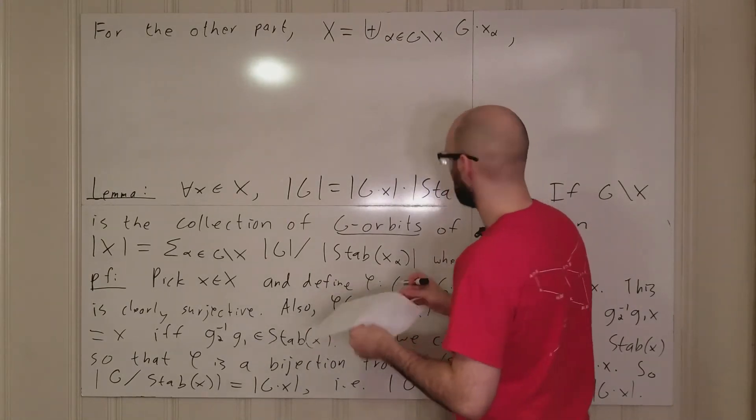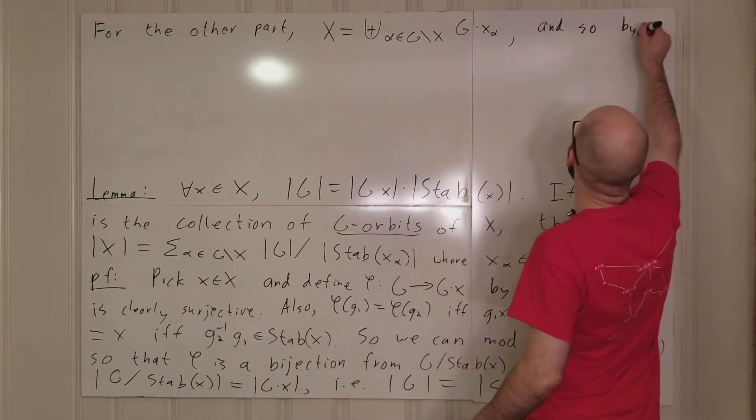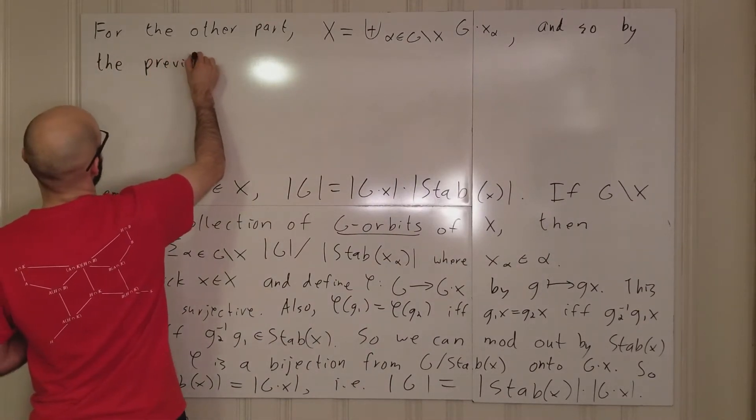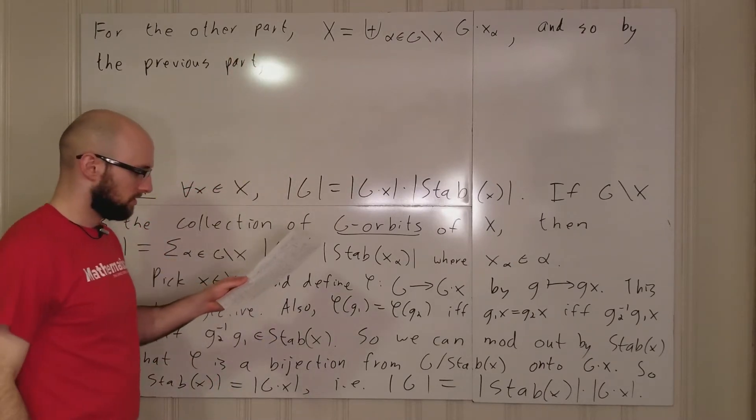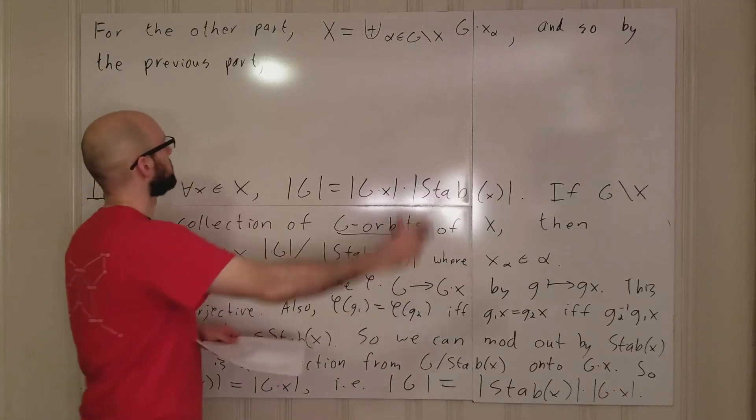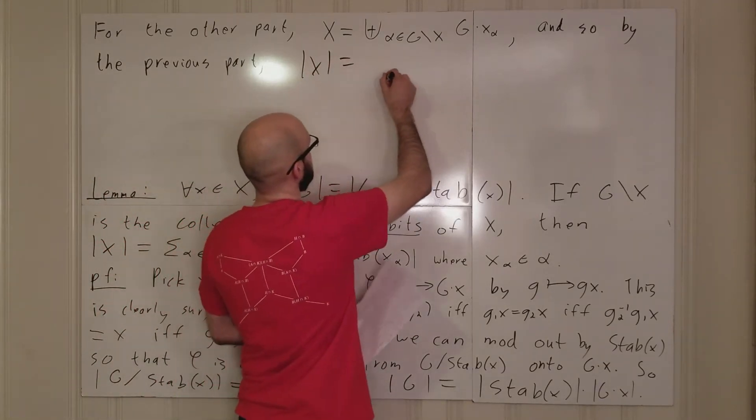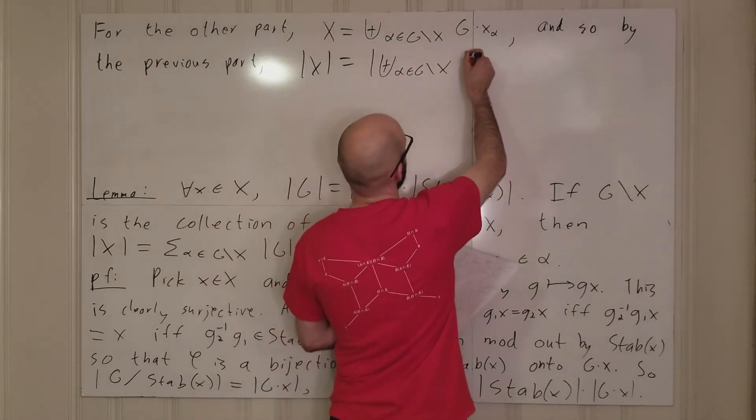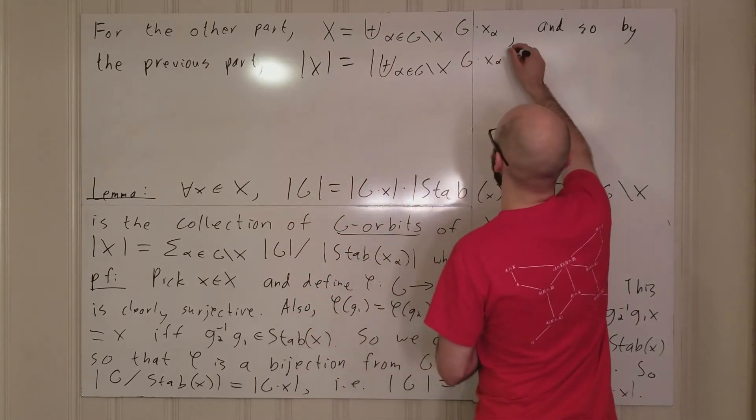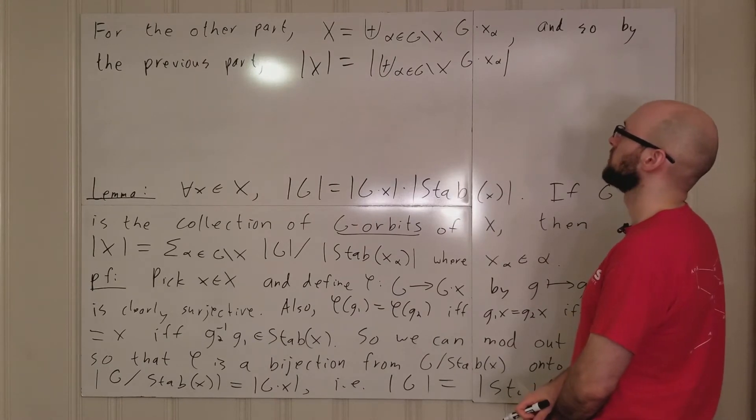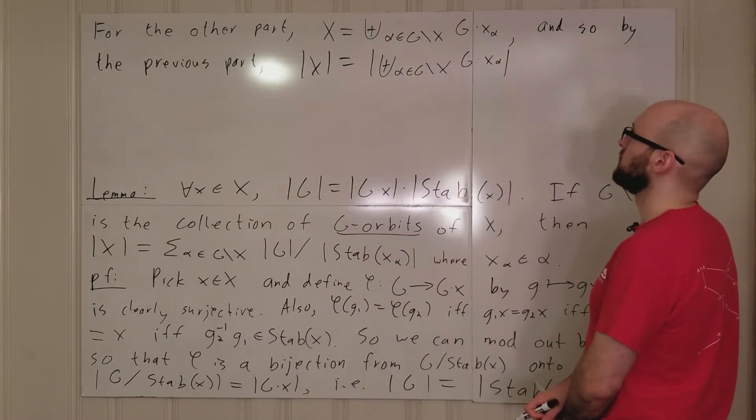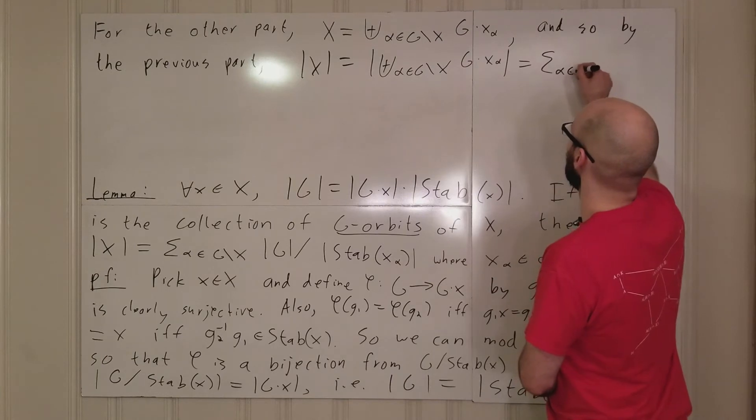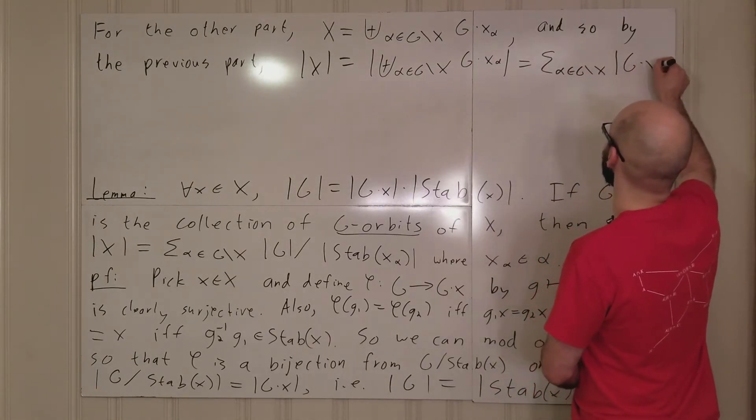So we have this. And so by the previous part, we can slap norms onto everything. We have this. And alpha in g mod x. And g... I cannot get that board spacing right. But this is the size of this disjoint union. Because these sets are disjoint, this is going to be just the sum overall alpha in g mod x of the size of this orbit.